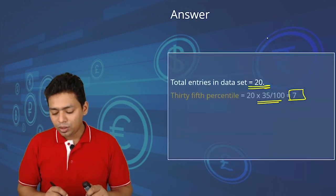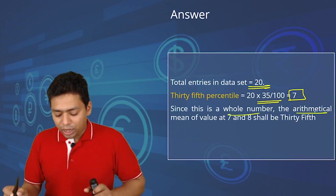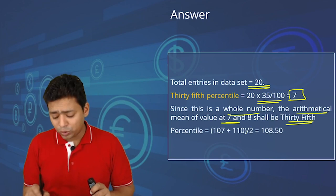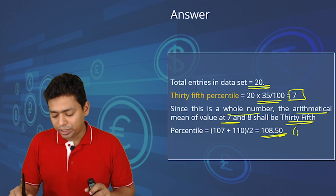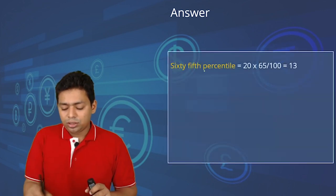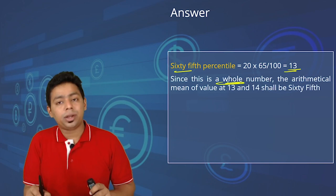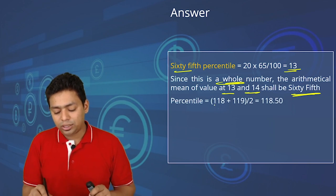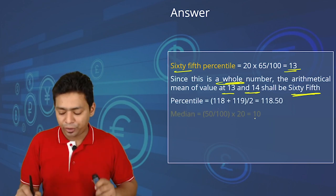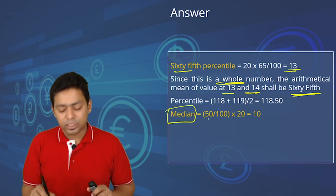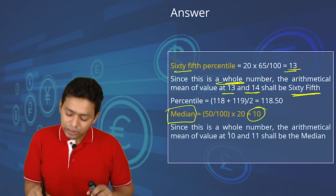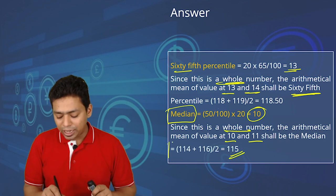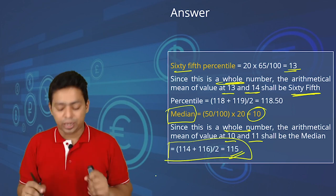To summarize: the 35th percentile value is 108.5 (average of 7th and 8th values: 107 and 110). The 65th percentile is 118.5 (average of 13th and 14th values: 118 and 119). The median is 115 (average of 10th and 11th values: 114 and 116). The arm's length price when outside the range is 115.